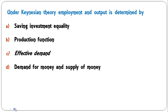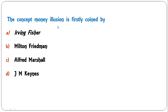Under Keynesian theory, employment and output is determined by saving-investment equality, production function, effective demand, or demand and supply of money? The correct answer is effective demand. Keynes gave importance to effective demand — the equality of aggregate demand and aggregate supply — which influences output and employment in the economy. So C is the correct answer.